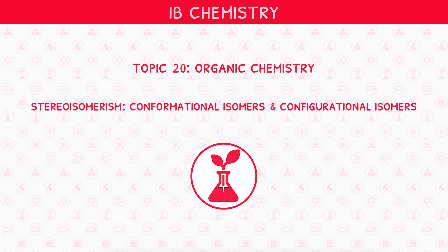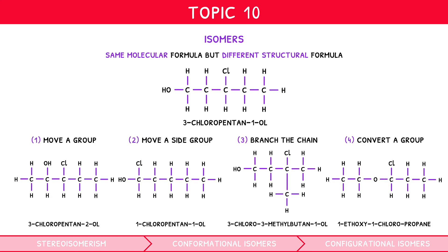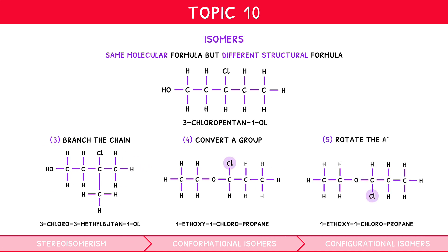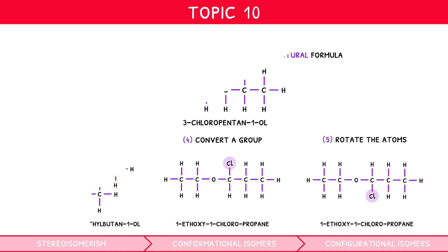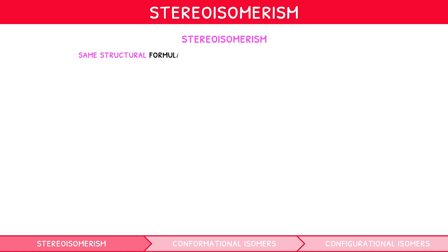In the second video of our IB Chemistry Topic 10 video series, we introduced isomers as species with the same molecular formula but a different displayed formula. However, even with the same displayed formula, isomers can exist due to the rotation of atoms in space. This is known as stereoisomerism, and is formally defined as two species with the same structural formula but different arrangement of atoms in space.